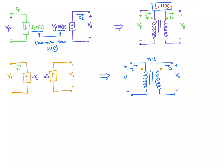You can model the transformer with dependent sources, and in terms of transformer representation it will be 1 : M(d). The dot convention is important: the current exits from the secondary winding side (acting as source) and enters through the dot on the primary side winding (acting as load), which defines the dot placement on both sides.